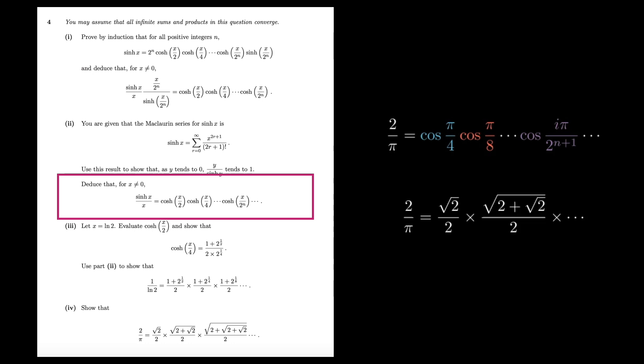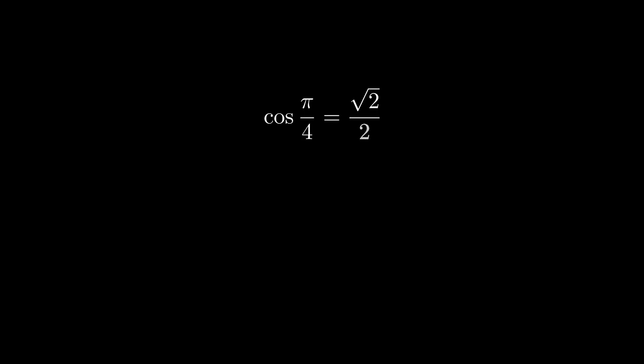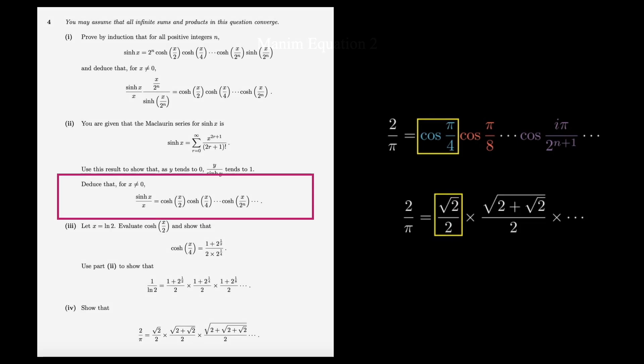A breakthrough point to this lies on this term, square root 2 over 2. This is exactly cosine pi over 4. So we might start from this to see the relationships between the terms and cosine pi over 4.